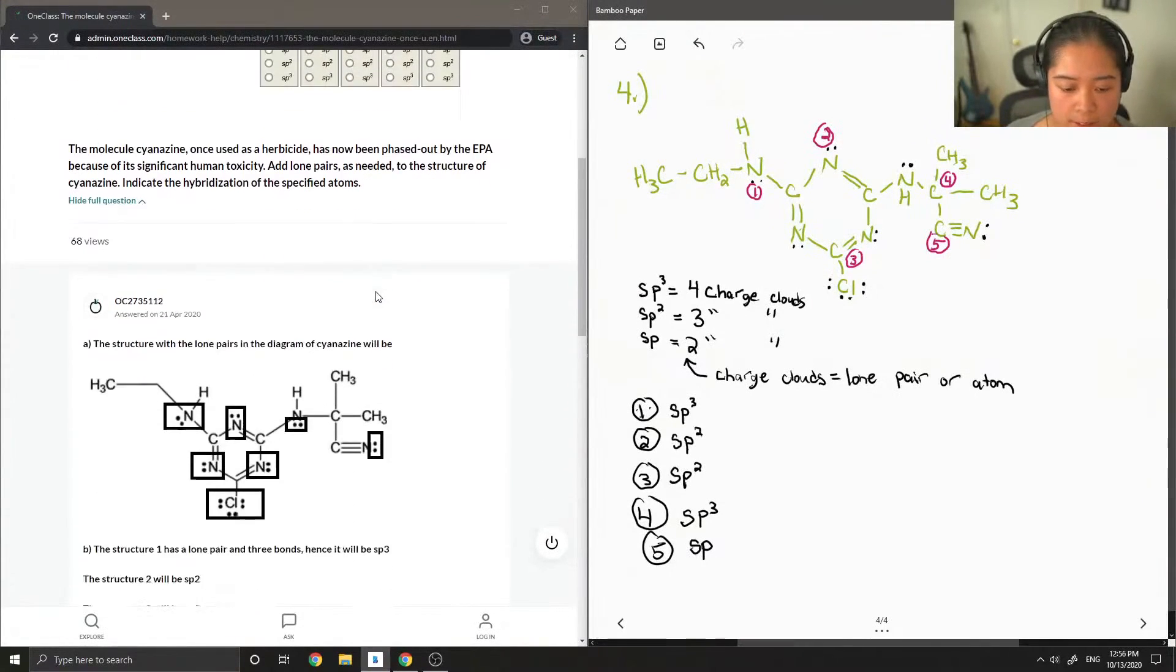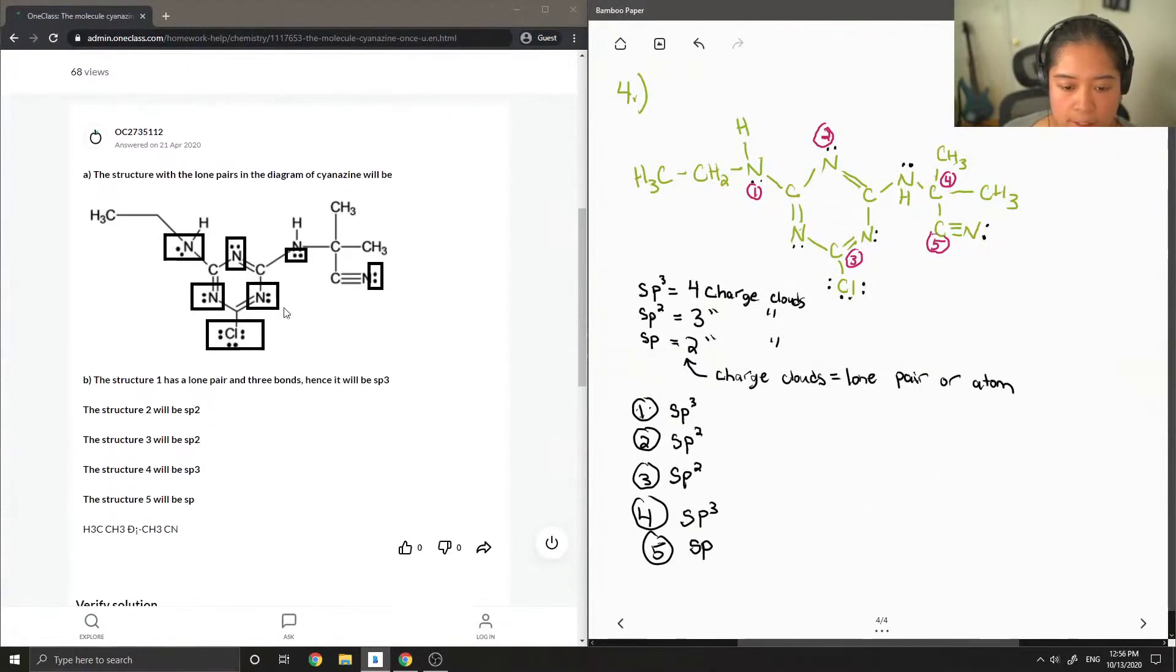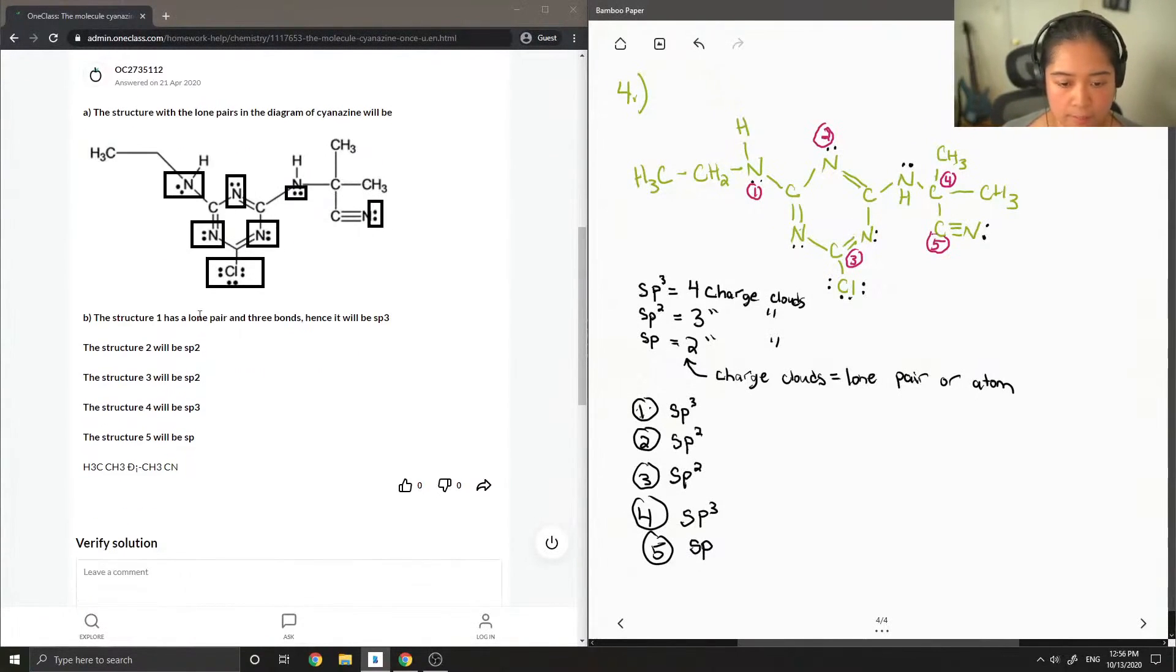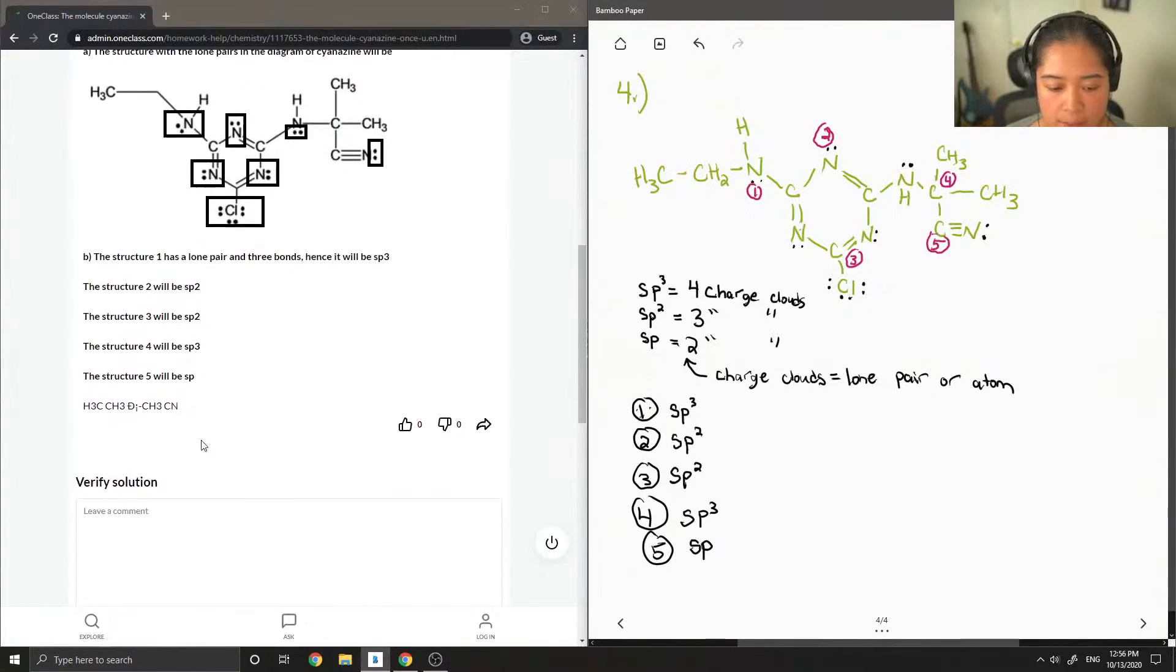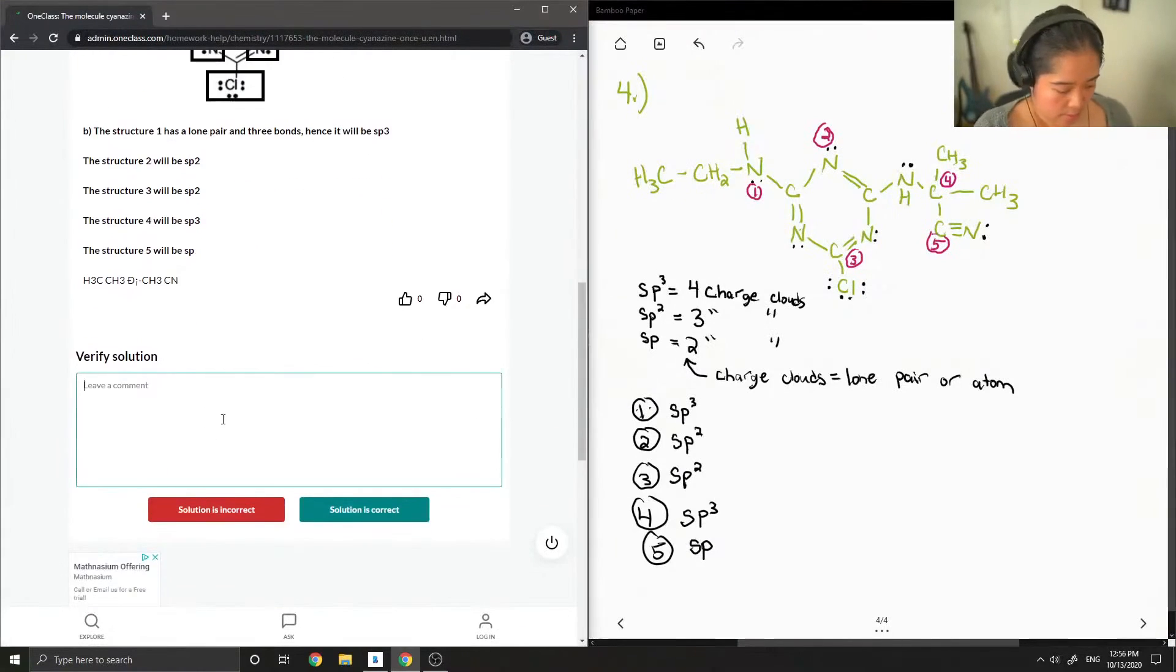Now let's look at our answer. They drew in all of the lone pairs in the right places. Lone pair and three bonds, SP3, SP2, SP2, SP3, and SP. This solution is correct.